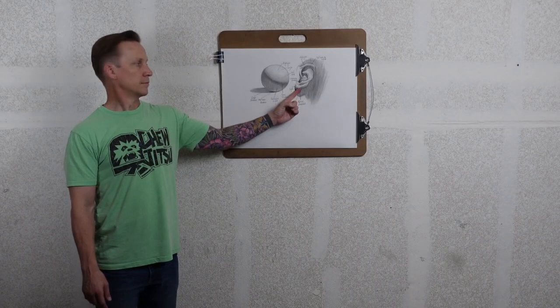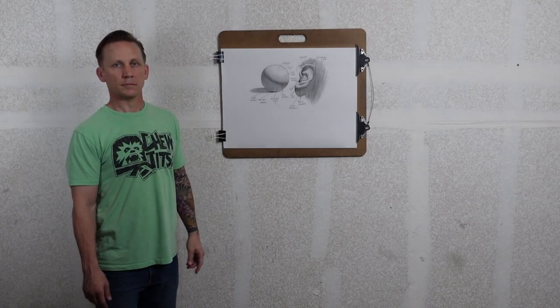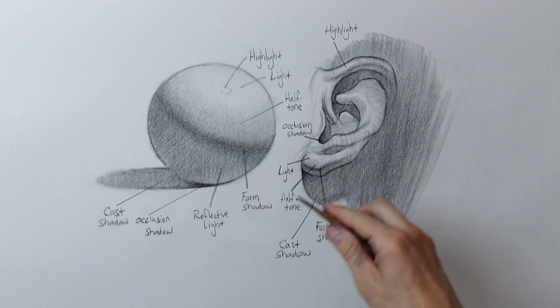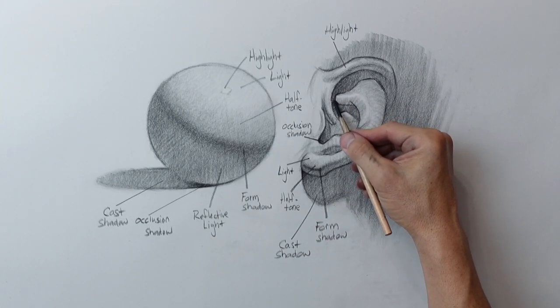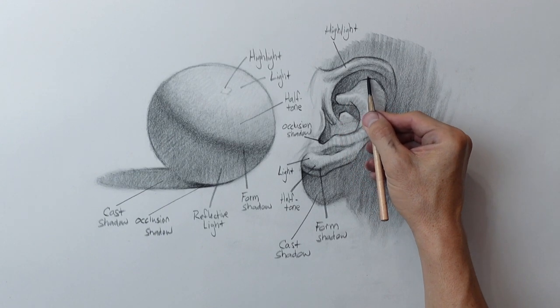Hey guys, so I had a lot of requests for a video on shading, so I went ahead and did that. I drew a ball next to an ear and we're going to study the shadows. So we're using the ball as a reference for the shadows in the ear. There's form shadows, cast shadows, reflective light, highlights, mid-tones, half-tones — all that good stuff. I'll go over all of that in this video and more.